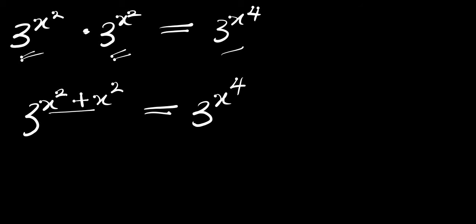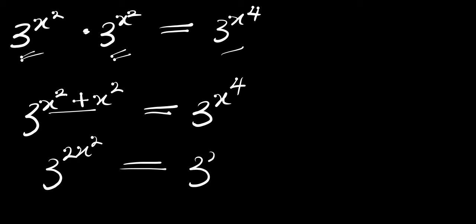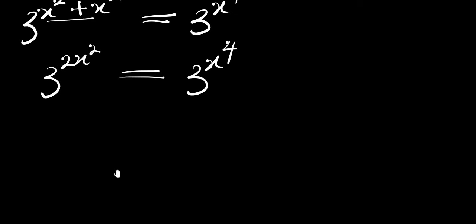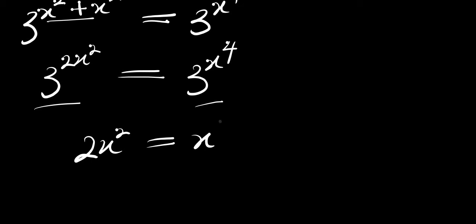So if we add these two exponents we will have 3 power 2x squared, and this equals 3 power x to the 4. Now the bases are the same, so we simply compare the exponents: we have 2x squared equals x to the 4.